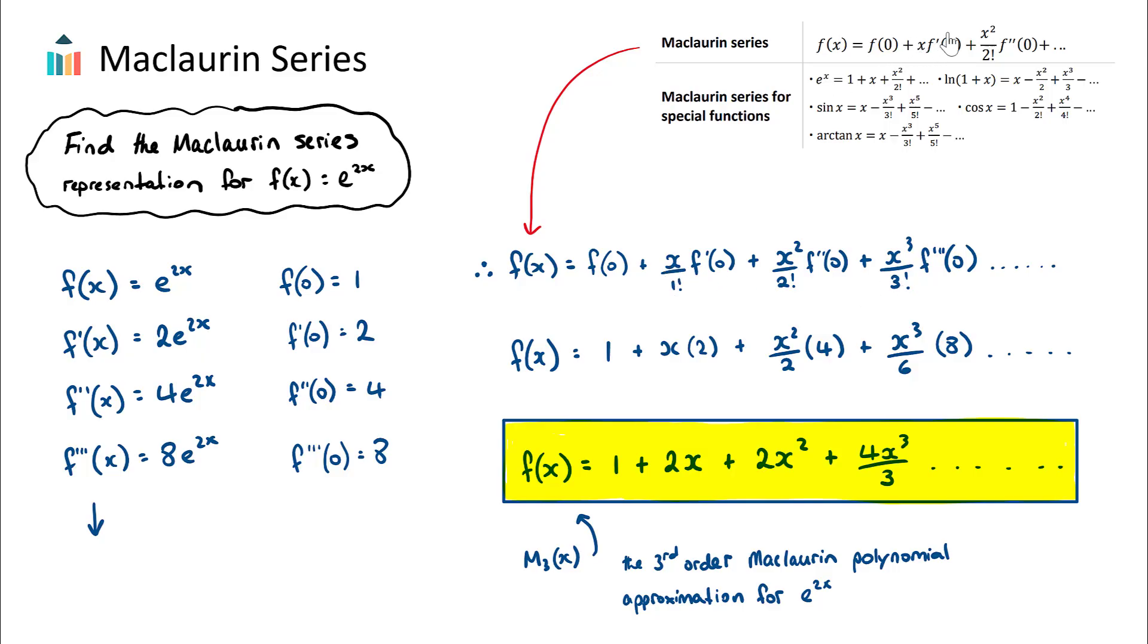That's plus x squared over 2 factorial multiplied by the second derivative of f when x is 0. And this just continues on. And hopefully we see the pattern. The next term would be x cubed over 3 factorial. This number would pair up with this one, as we can see here. And that's multiplied by the third derivative of f when x is 0. And this will just continue on. This is an infinite series here.